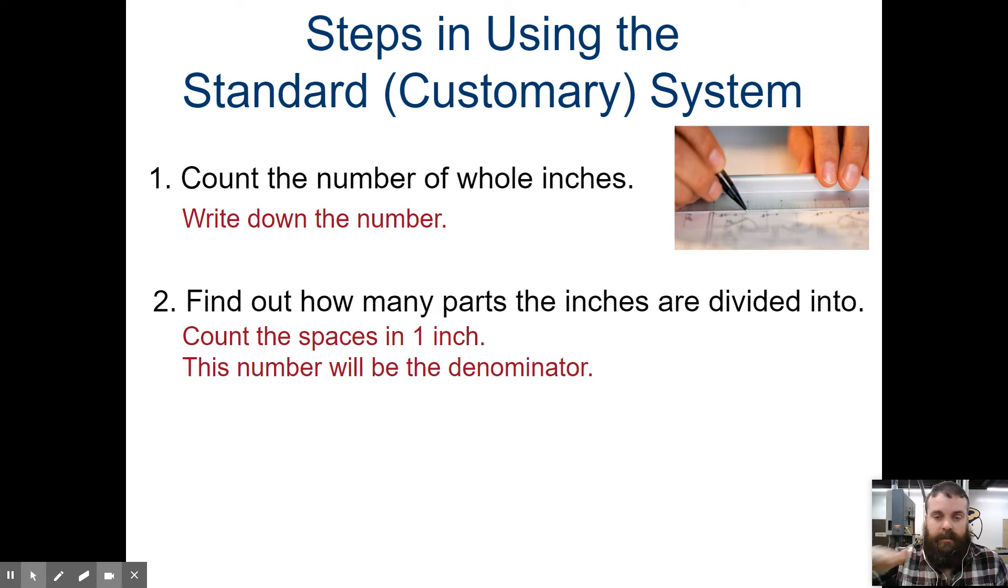So the denominator is on the bottom of our fraction. How many spaces that are that length or longer do you have from your previous whole inch to your next whole inch? Count those, how many spaces you have, and then write that as your denominator in the fraction.